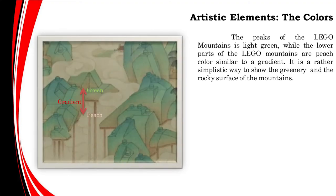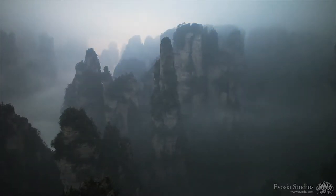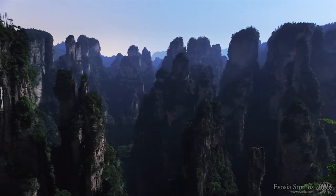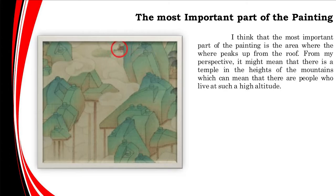Some notable artistic elements are the use of color. The peaks of the Lego mountains are light green while the lower parts are peach — a simplistic way to show greenery and rocky surfaces. The mountains are all made of trapezoid prism-shaped Legos, making the painting look like a Lego set. The artist has rendered the perspective as if from an airplane or bird's eye view, where everything appears far away. You can tell the elevation by where the clouds make contact with the mountains. The most important part of the painting is the area where the temple roof peaks out of the clouds.